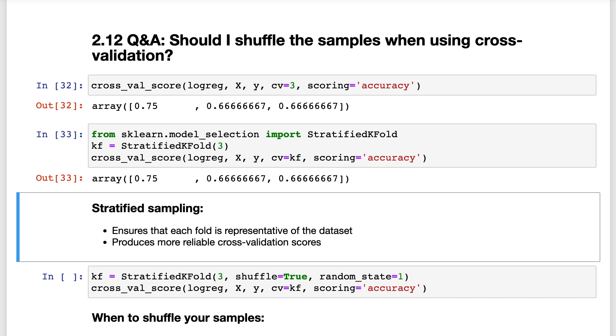For example, you could imagine that if your dataset was sorted by one of the features, then some folds would only have high values of that feature, and other folds would only have low values of that feature, which could result in unreliable cross-validation scores.